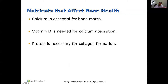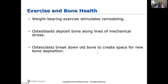Nutrients that affect bone health: calcium is essential for the bone matrix; vitamin D is needed to absorb calcium; and protein is necessary to form collagen. As far as exercise and bone health, weight-bearing exercise stimulates remodeling — it brings osteoblasts into play where you can build bone. The full function involves causing a little breakdown then repairing with new bone, which makes bone stronger overall. Osteoblasts deposit bone along lines of mechanical stress, and osteoclasts break down old bone to create space for new bone.